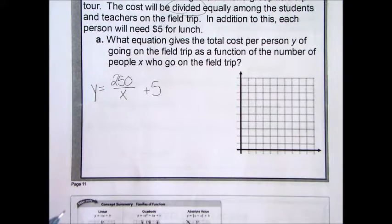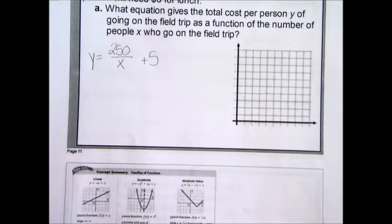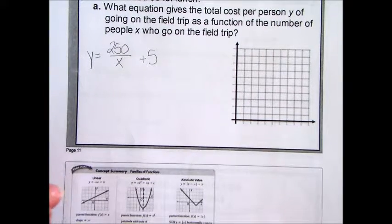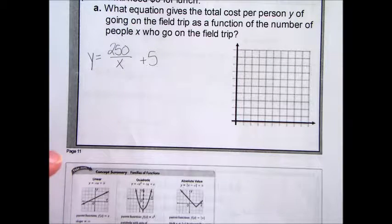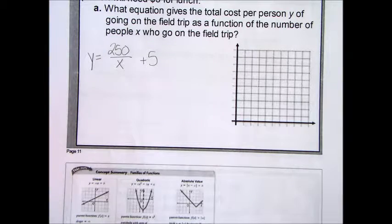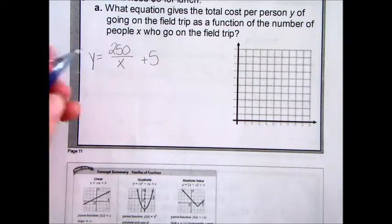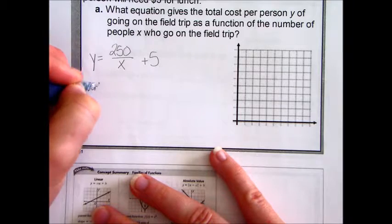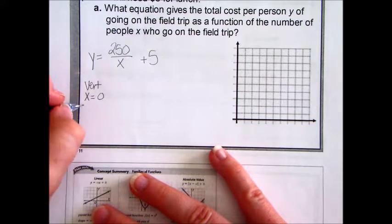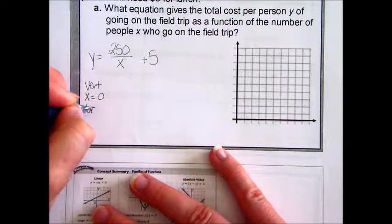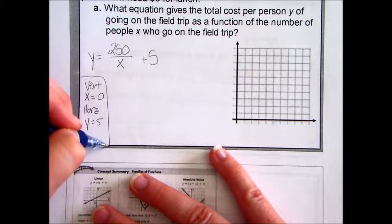So, what equation gives the total cost per person? We've done that. And, oh, look, lucky us we get to graph it. So, why don't we just, let's make this logical for like an actual school field trip. We can start with zero people going. But, hopefully you understand zero is going to be an asymptote. In fact, I'm going to write that. We're going to have a vertical asymptote of x equals zero. And, we are going to have a horizontal asymptote. Hopefully, you've caught on now. That's going to be y equals 5. That's just kind of a side note.